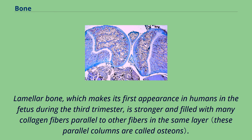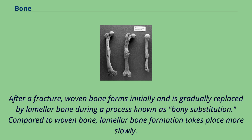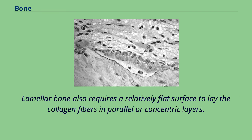Lamellar bone, which makes its first appearance in humans in the fetus during the third trimester, is stronger and filled with many collagen fibers parallel to other fibers in the same layer. In cross-section, the fibers run in opposite directions in alternating layers, much like in plywood, assisting in the bone's ability to resist torsion forces. After a fracture, woven bone forms initially and is gradually replaced by lamellar bone during a process known as bony substitution. The orderly deposition of collagen fibers restricts the formation of osteoid to about 1–2 micrometers per day.